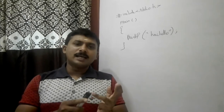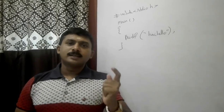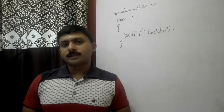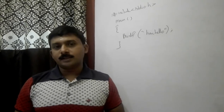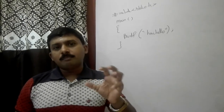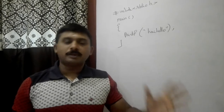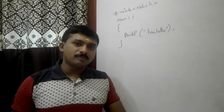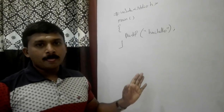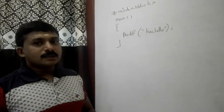The five token categories are: keywords, identifiers, constants, strings, and operators. Additionally, there are punctuators. Punctuators provide special information to the compiler.